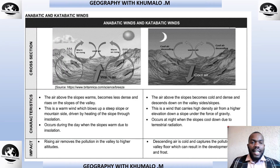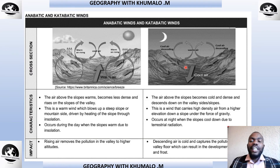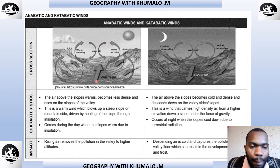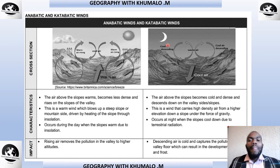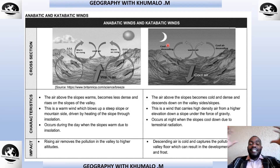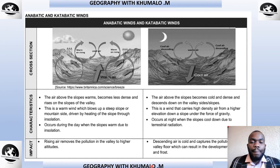You must be able to differentiate between the catabatic and the anabatic winds. The cross-section of an anabatic wind and a catabatic wind are different. 'Kata' means night and 'ana' means day. Anabatic winds blow up the valley slope during the day, and catabatic winds blow down the valley slope during the night. Now let's look at the characteristics of each.